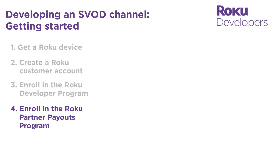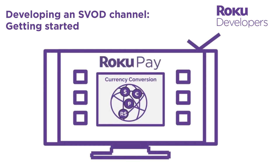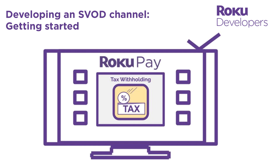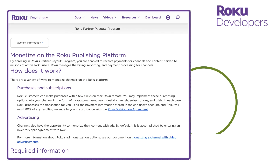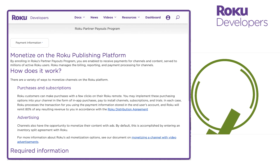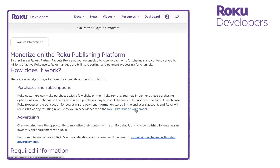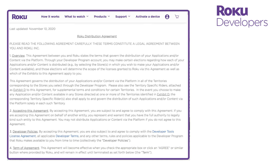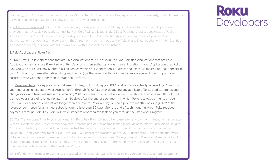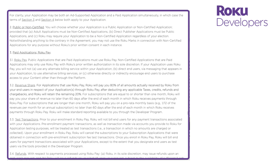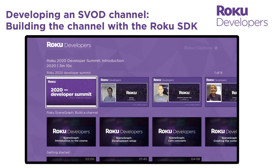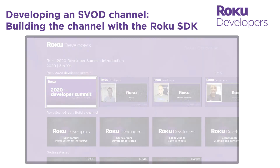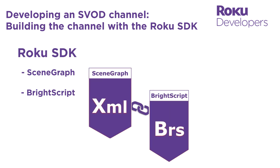Note that for international publishers, Roku Pay automatically handles international currency conversions and tax withholdings for you. Once Roku verifies your bank information and tax documents, your developer account will be enrolled in the Roku Partner Payouts Program. See the Roku Distribution Agreement for more information on how payouts are split between publishers and Roku and how often publishers receive payouts.